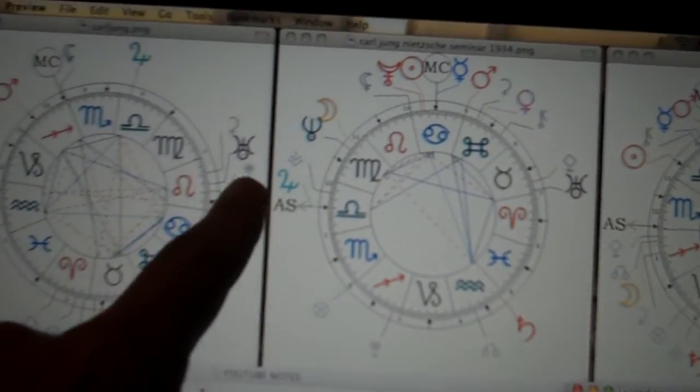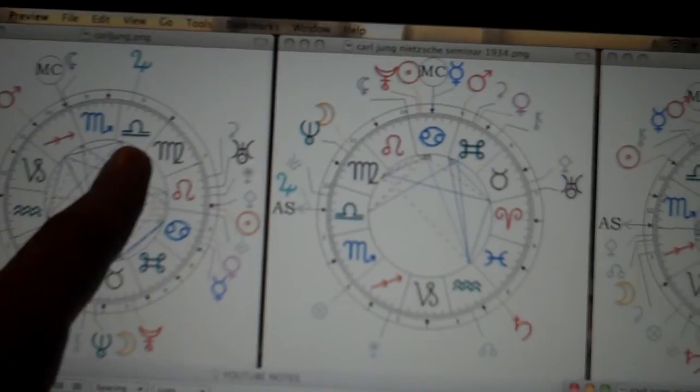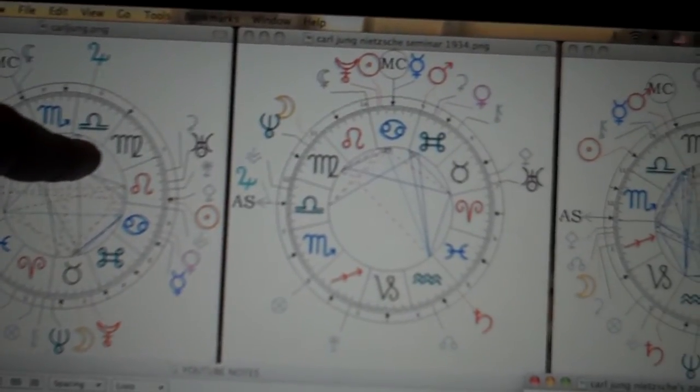And Jupiter's in Libra at that time, and Jung was born with Jupiter in Libra, so he's having a Jupiter return.